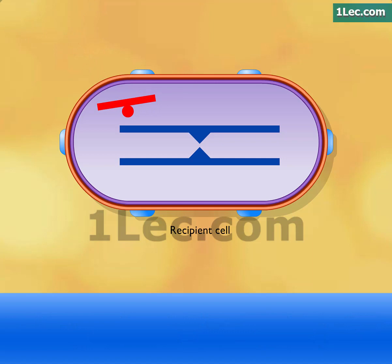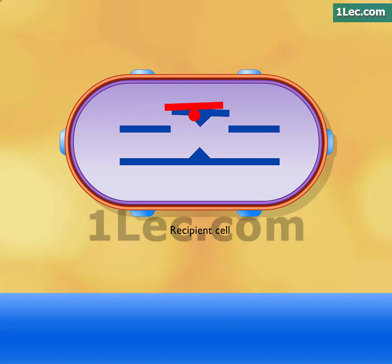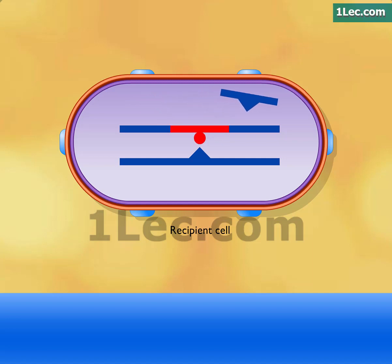The single-stranded donor DNA pairs with a homologous region on the recipient DNA and is integrated into the recipient genome by a breakage and reunion mechanism called homologous recombination.